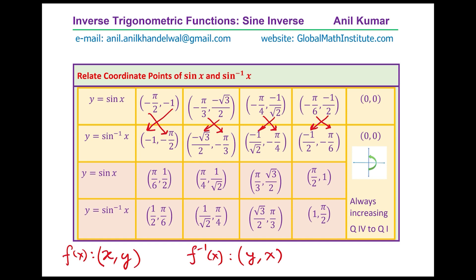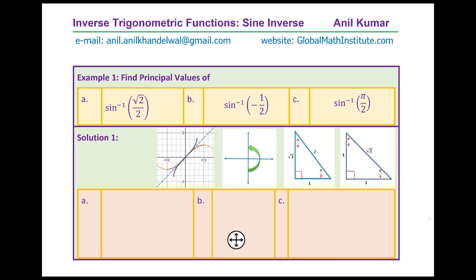This swapping is the result of reflecting on the line y equals to x. In quadrant 1 all values are positive and they swap to give the exact value for the inverse of sine function. Sine inverse is always increasing from quadrant 4 to quadrant 1, with critical points at minus 1, minus pi by 2 and 1, pi by 2. The output of the inverse is always the angle in radians, and the input is a real number between plus and minus 1.